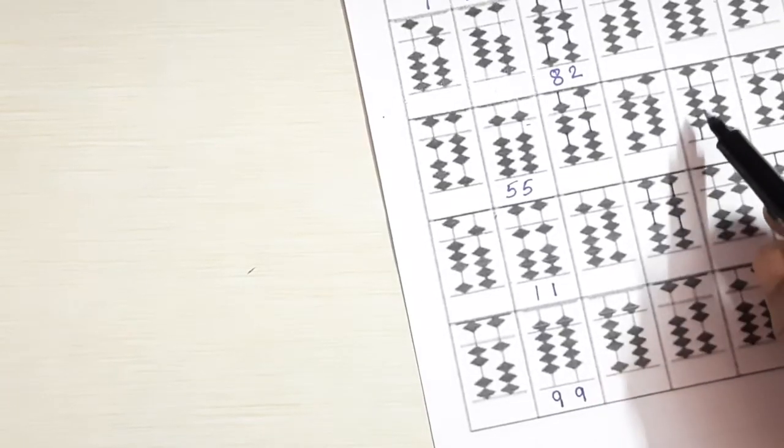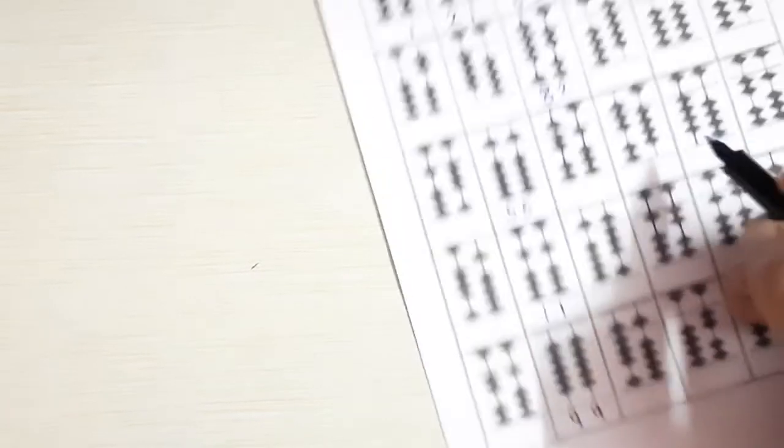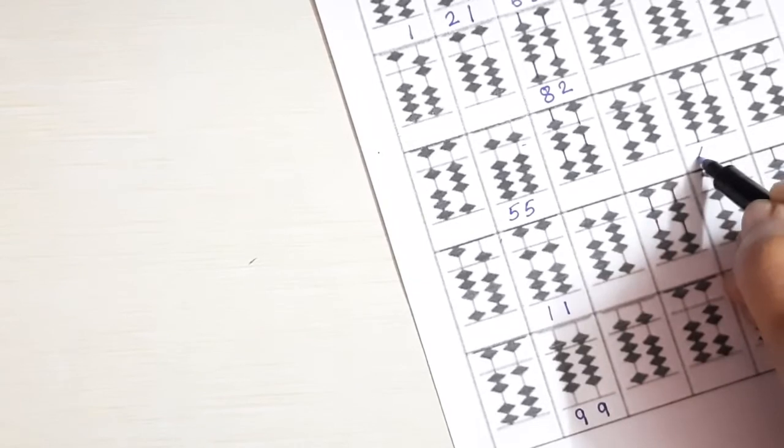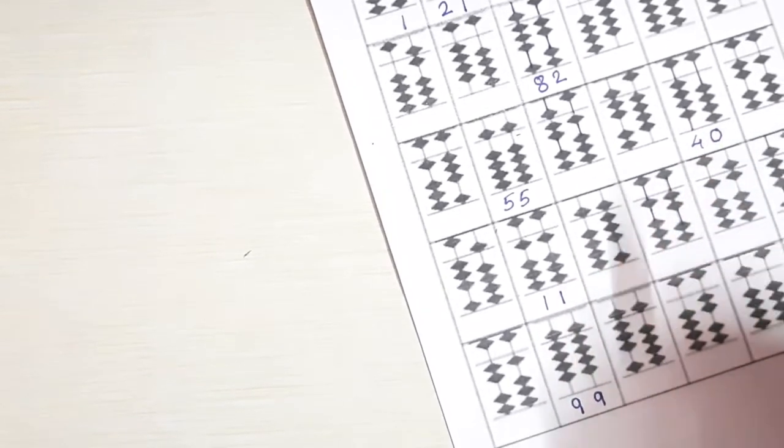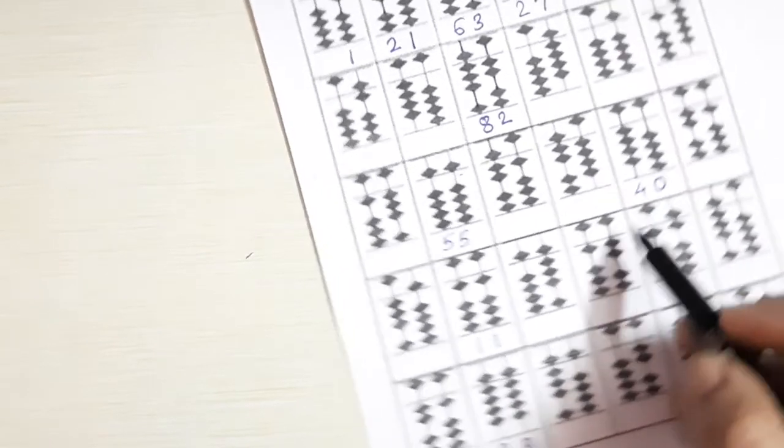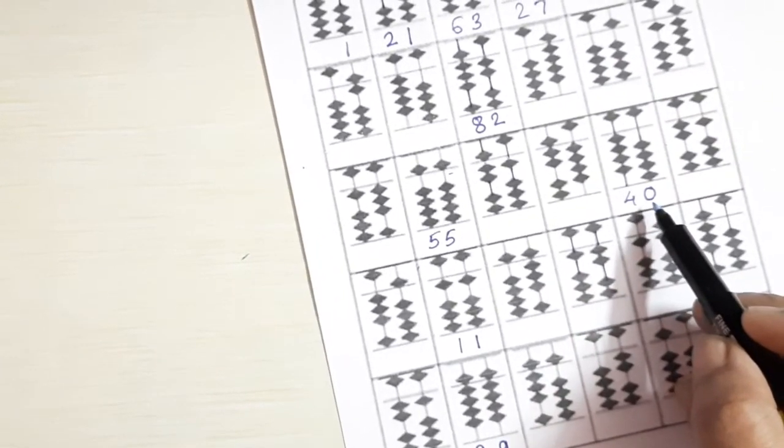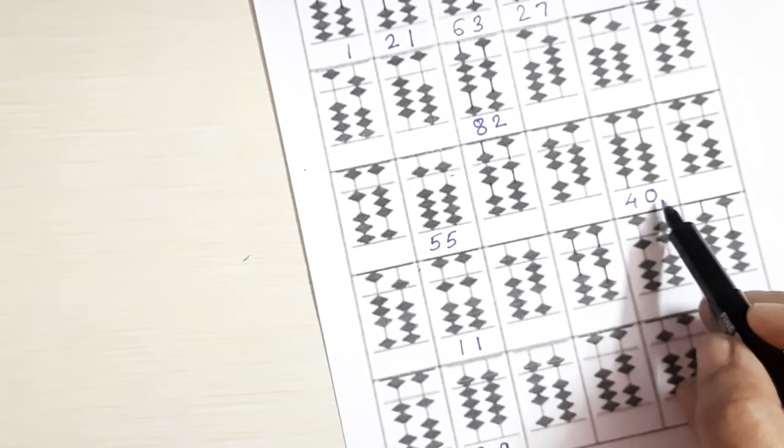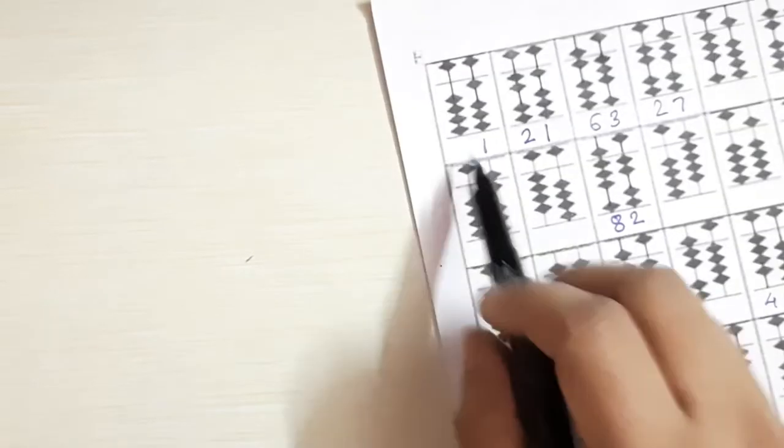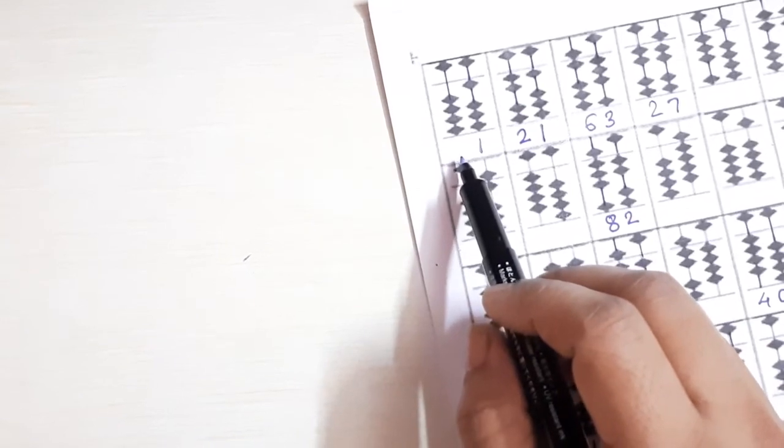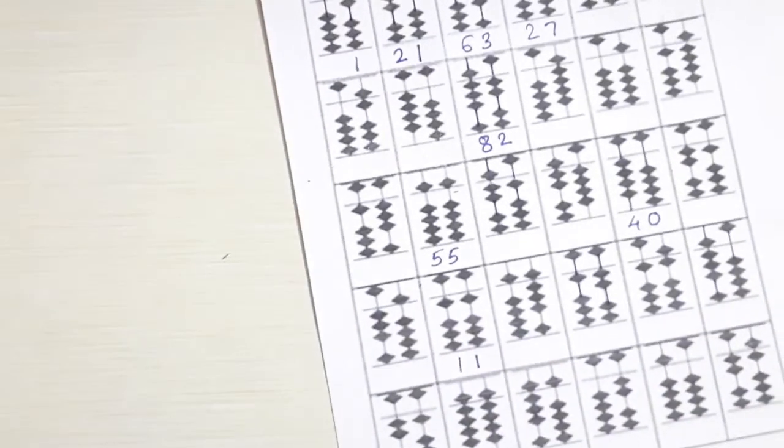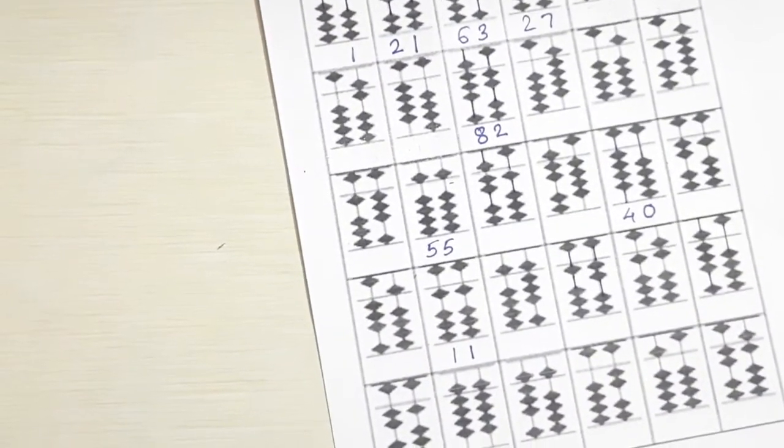Then 4, 0. Your 4 beads are touching here. None of the bead is touching the bar, so this will be your 0. This 0 is important because this matters if you don't write it. So 4, 0, 40. And here 0, 1. So if you don't write your 0, it's okay.